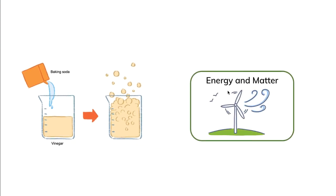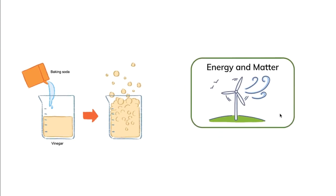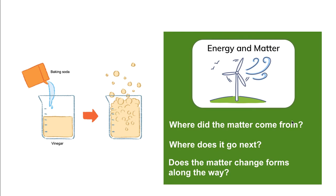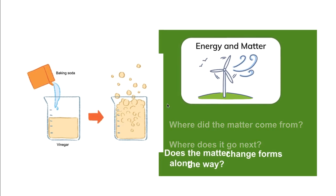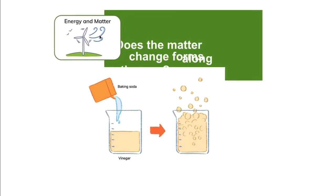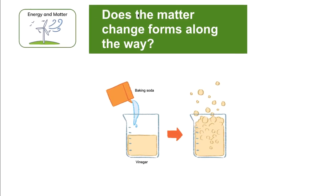Chemical reactions really epitomize the cross-cutting concept of energy and matter. We can ask where the ingredients come from to make the chemical reaction, or if any of the products escape. But most importantly, we can ask: does the matter change forms along the way?